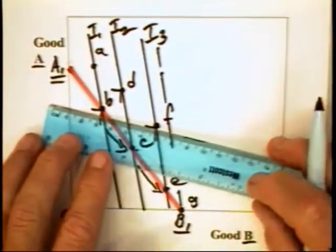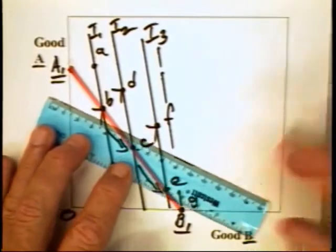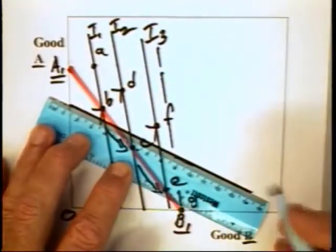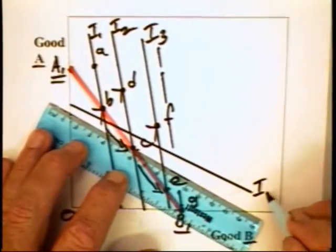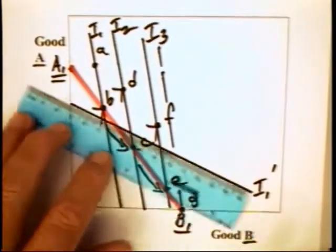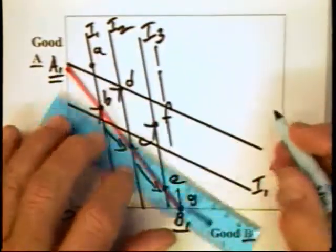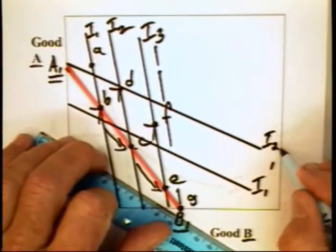If we were to draw the indifference curves downward sloping like this, that is, you have I1 prime, then there's got to be an indifference curve that cuts through here, I2 prime, whereby the individual is definitely going to move from that point to this combination.